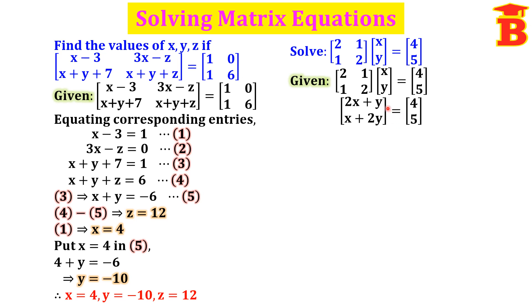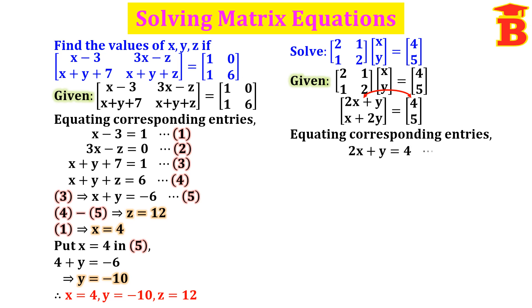Now these two matrices are equal, so we can equate both sides. Equating corresponding entries: first and first gives 2x plus y equal to 4, and second and second gives x plus 2y equal to 5. Take these as equations 1 and 2.